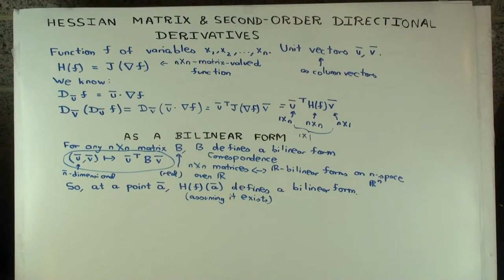Okay, so in this talk I'm going to describe the Hessian matrix as a bilinear form. Or rather I'm going to explain how the Hessian matrix, which is used to compute second-order directional derivatives, how that computation is like evaluating a bilinear form.